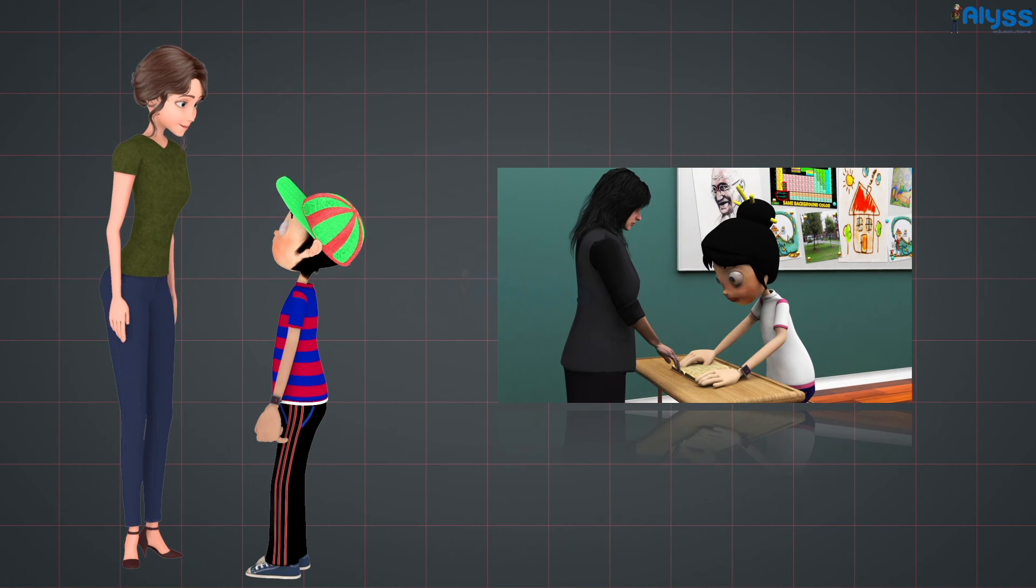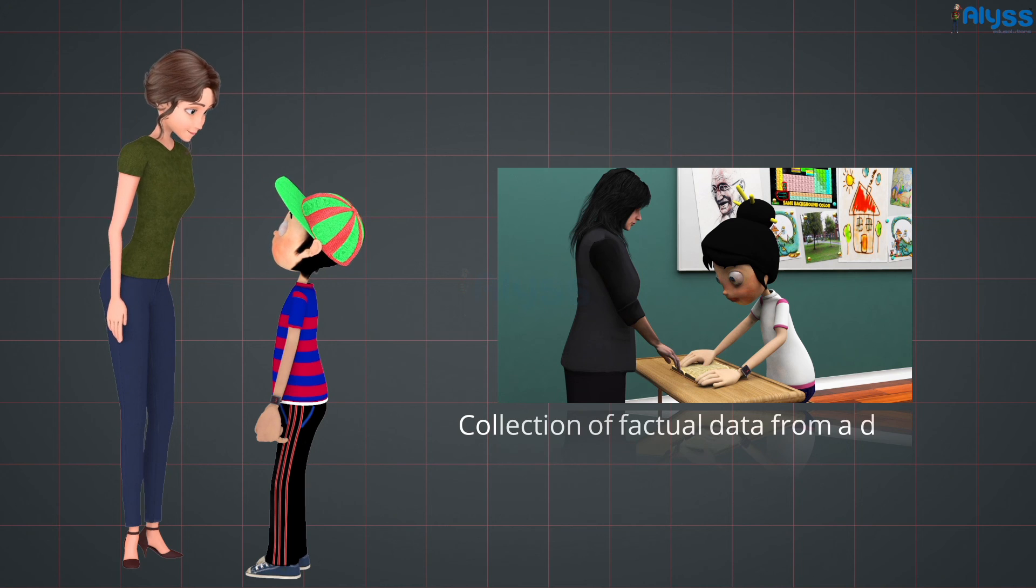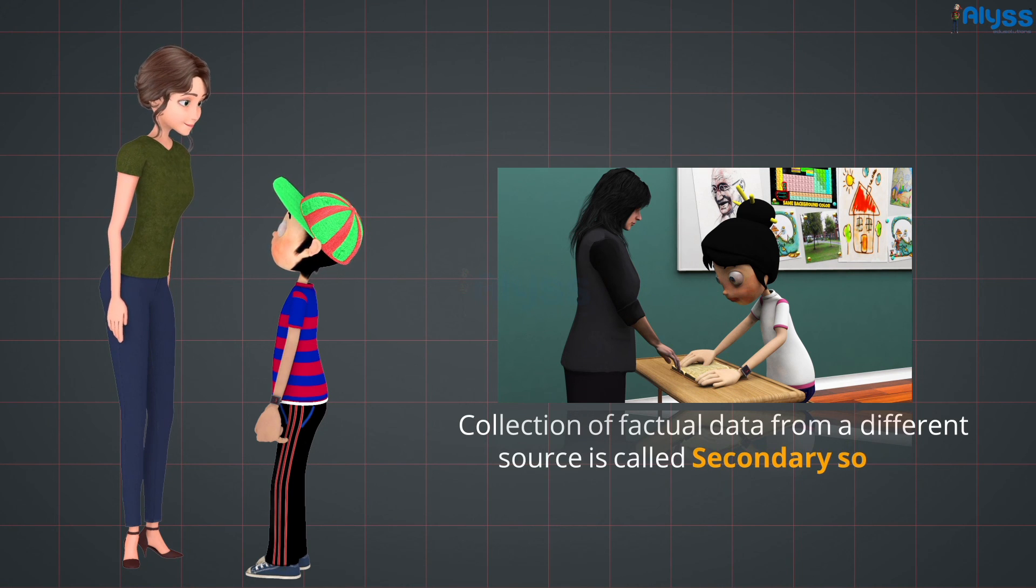In example 2, Rajesh collects the details of the numbers of students from the student's record book of the school. Collection of factual data from a different source is called secondary data.